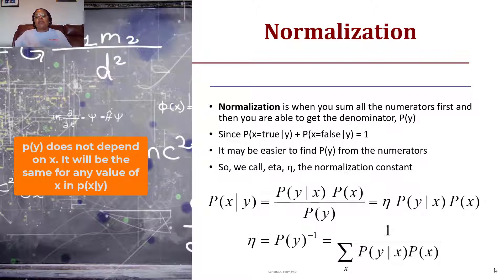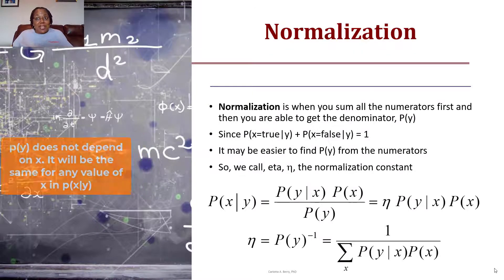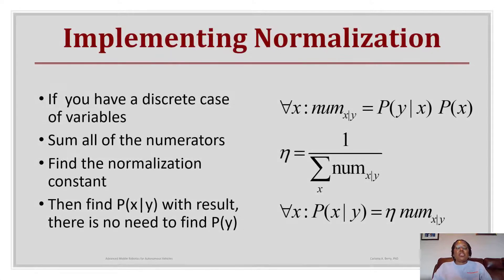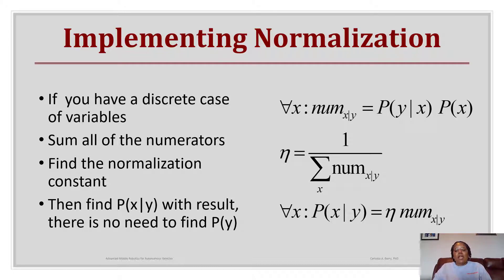We have now found a way to compute P(Y) without directly finding P(Y). For the discrete case, to implement normalization: sum over all X the probability of Y given X times the probability of X. Once you have that summation, take the reciprocal — that gives you eta. Then to find P(X|Y), multiply that normalization constant by the numerator for the specific instance of X given Y that you want.